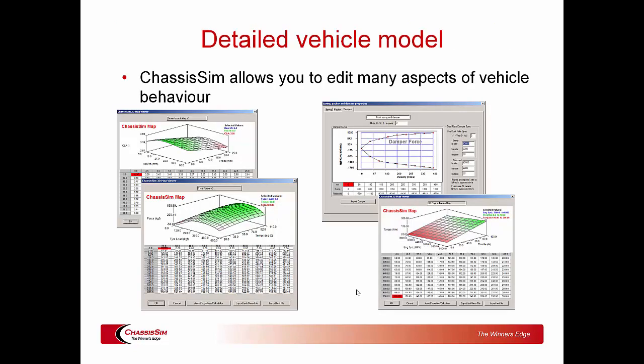ChassisSim has a fully detailed vehicle model. However, a word of caution — one of the things I always stress in the ChassisSim boot camps: start simple and get detailed later, not the other way around, or you will get lost. That said, if you need detail, you have the ability for fully detailed aero maps, friction and mechanical tire models, non-linear damper models, and full engine 3D models as a function of torque and RPM.